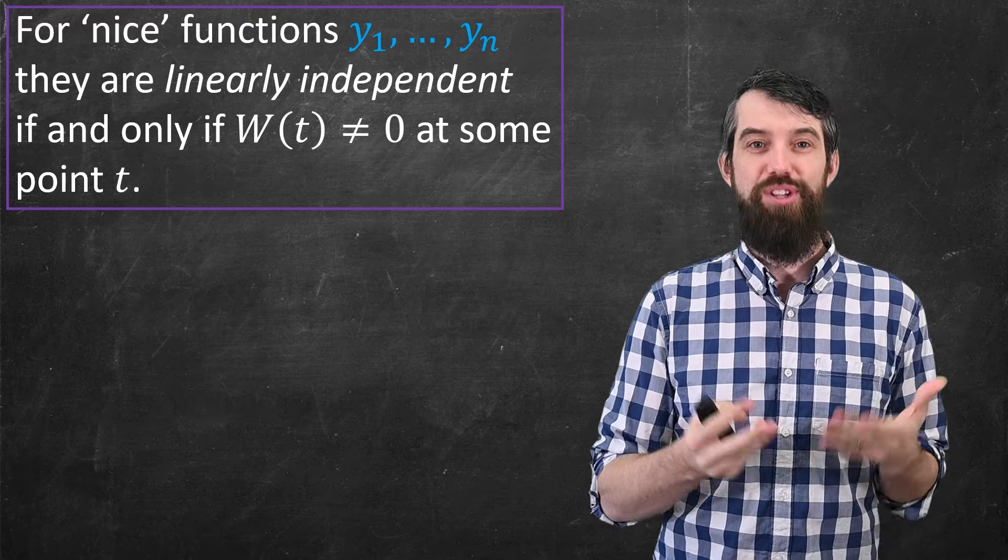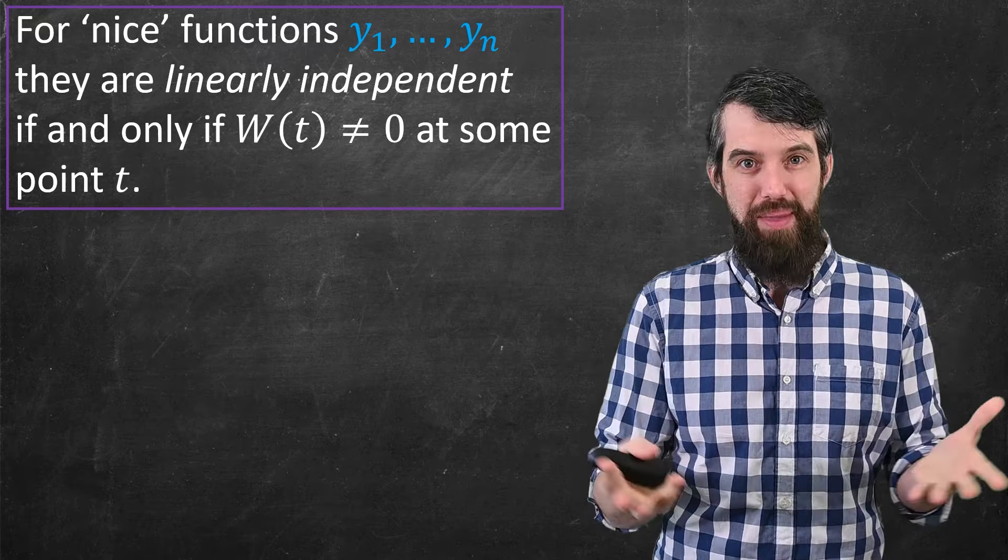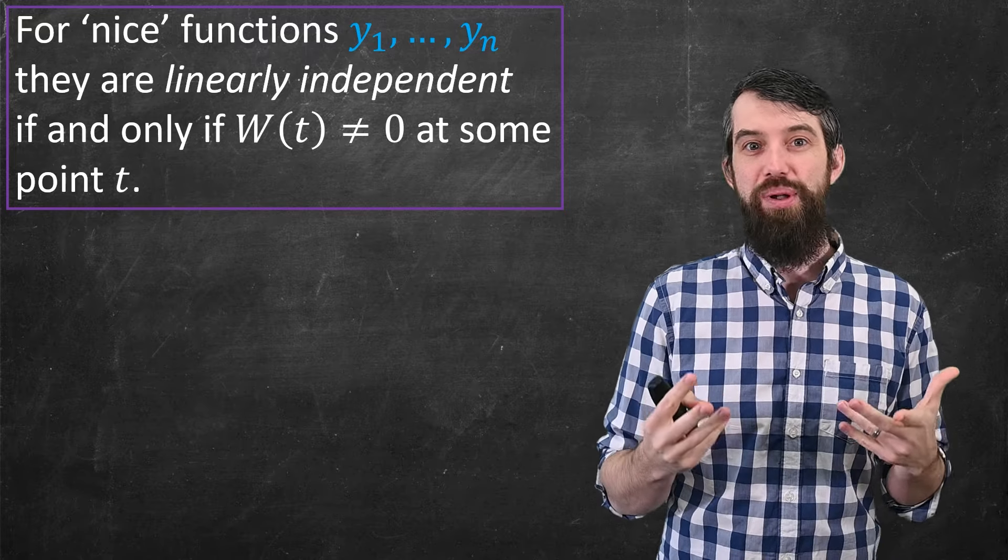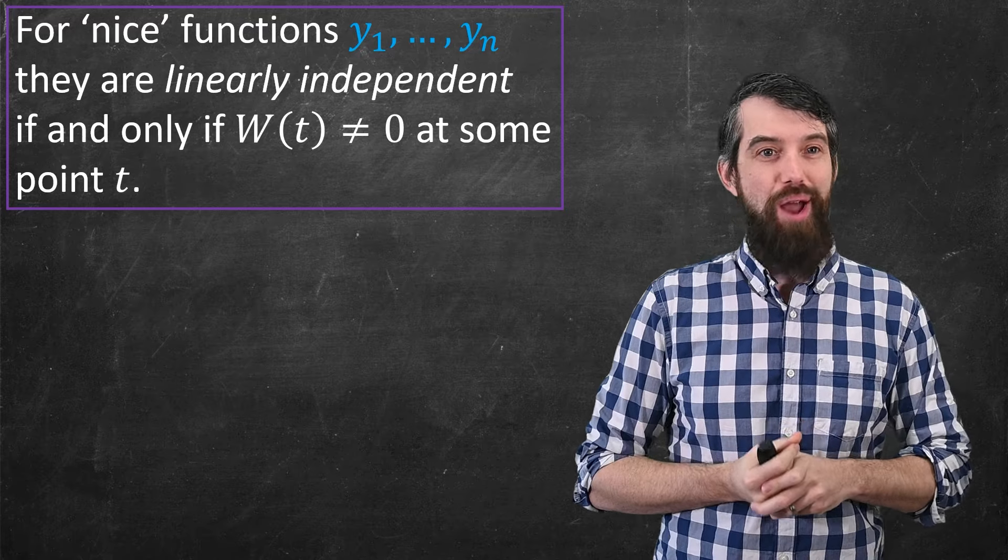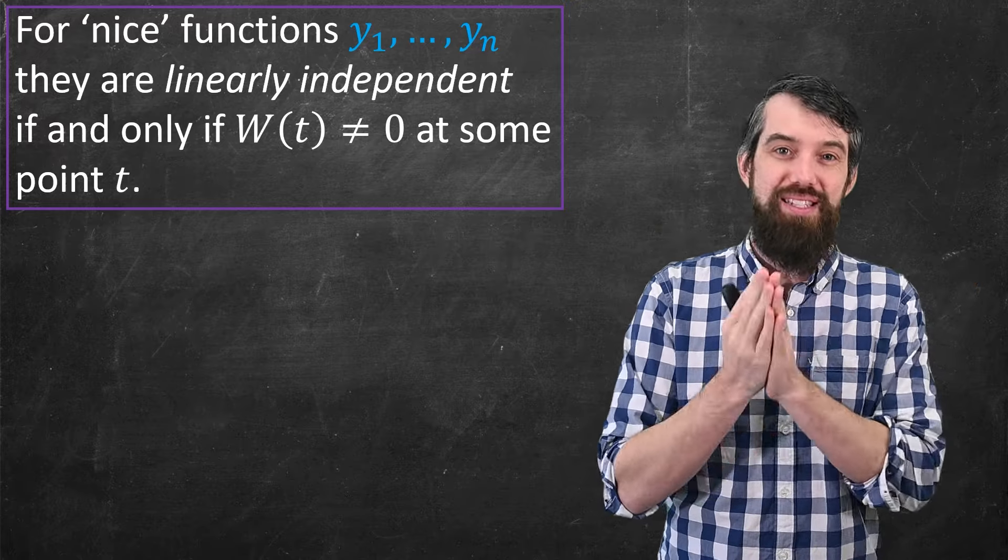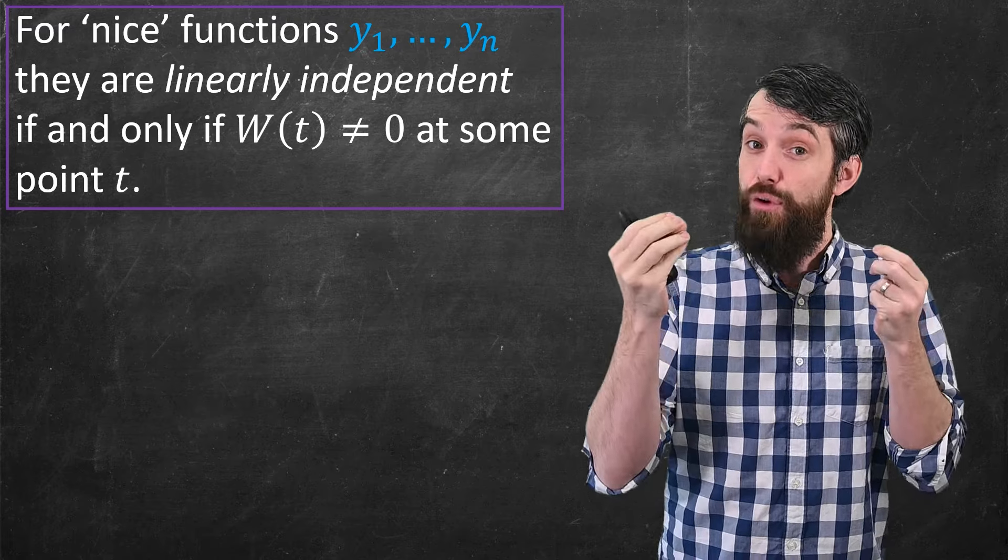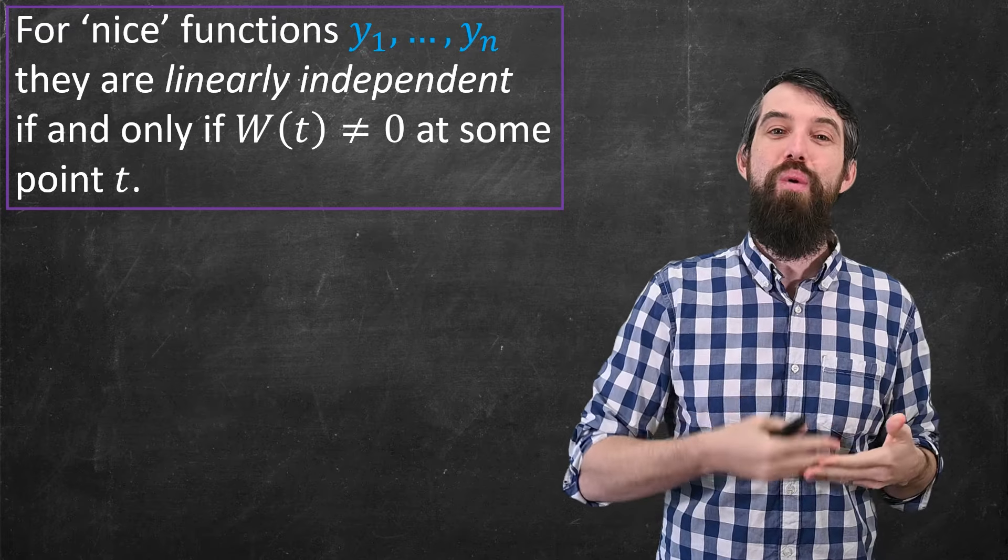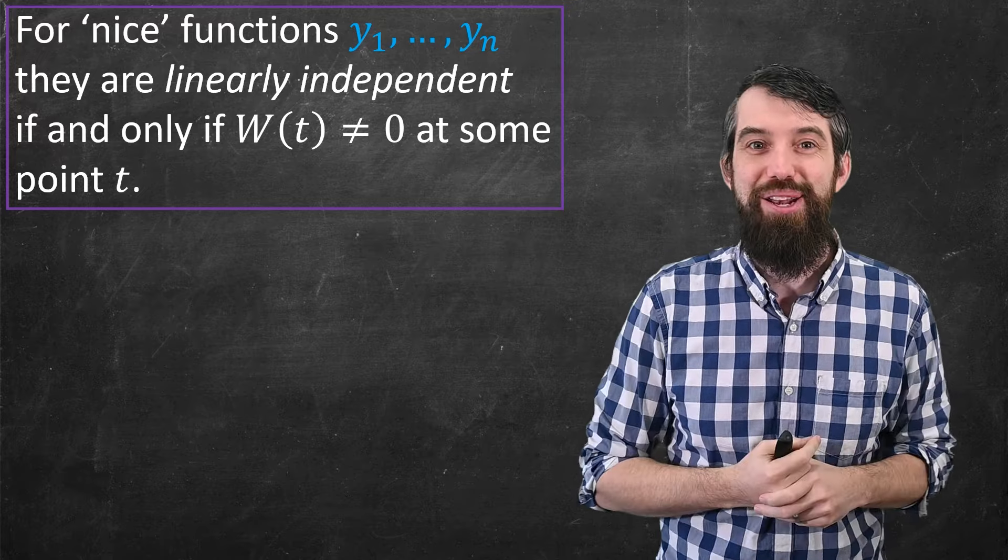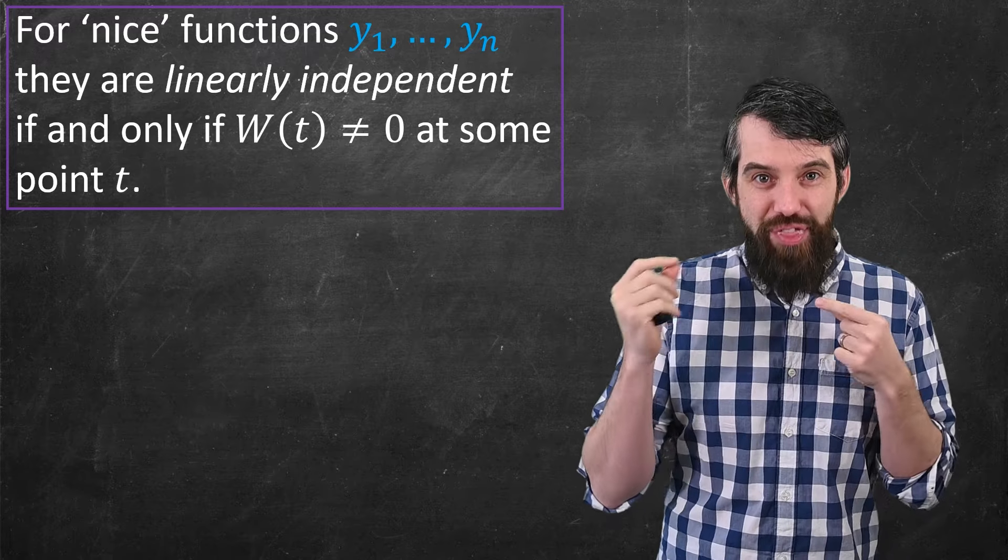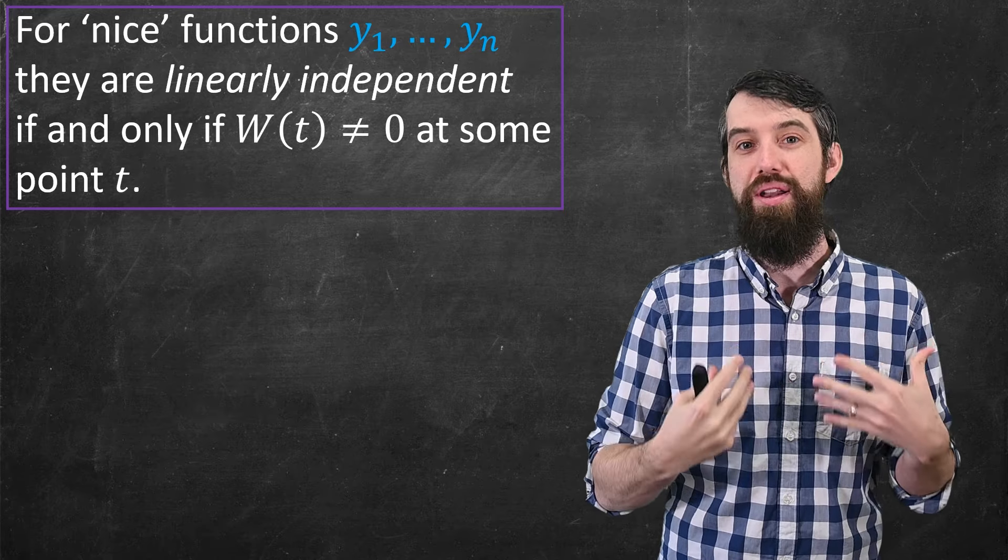So here's our theorem. If you have a list of functions y₁ down to yₙ, then they are linearly independent if and only if the Wronskian of them is somewhere non-zero. The Wronskian could be zero at some points, but if there's one spot where the Wronskian is non-zero, then they're linearly independent. This theorem is true under certain conditions. The functions have to be nice—for example, analytic functions, or solutions to a linear differential equation with continuous coefficients. So this theorem will be true in our context in differential equations.